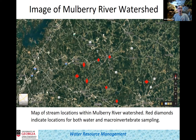This is an image of the Mulberry River Watershed, where all the creeks I looked at are located. In the top left corner is Lake Lanier, and in the bottom right is Athens, to give you a sense of scale. This watershed spans Barrow, Jackson, and Hall Counties, and the red diamonds on the screen mark where I took both water and macroinvertebrate samples.